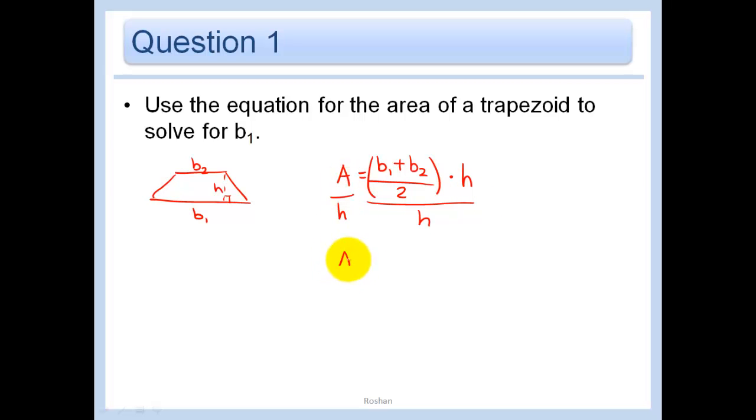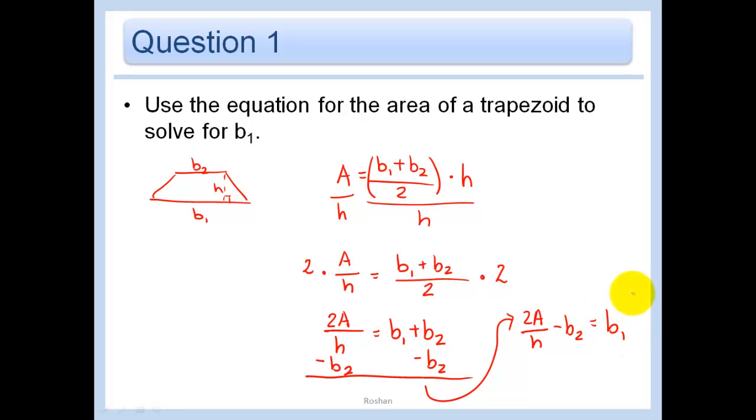So we have A over H equals B1 plus B2 all over 2. Now we want to multiply both sides by 2 to get rid of that fraction. So we have 2A over H equals B1 plus B2. And now let's scoot this B2 over to the other side. So we're left with 2A over H minus B2 is equal to B1. That's my answer.